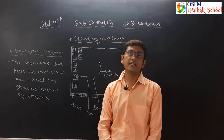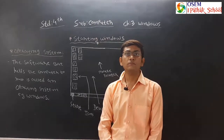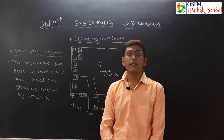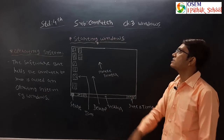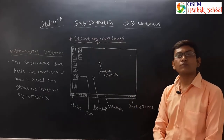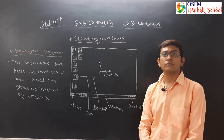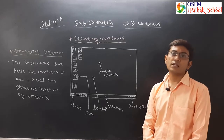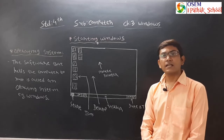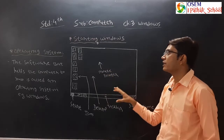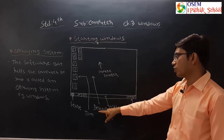So we can say Windows operating system is a very popular operating system. Now let's learn more about Windows, specifically about starting Windows. When you switch on your computer, after some time Windows starts automatically. After starting, it will display the main screen of the window, and that main screen is called the desktop.